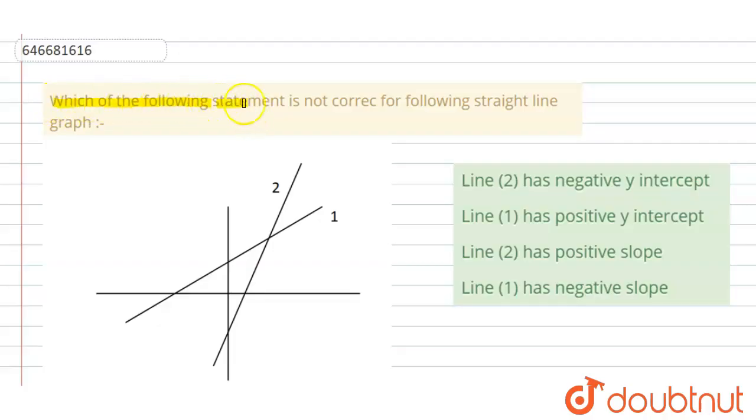Which of the following statement is not correct for the following straight line graph? These are the four options given and we have to find the wrong one. Now first analyze these graphs.